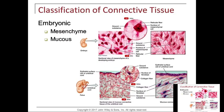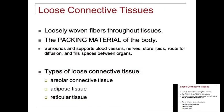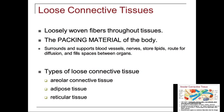The classification of connective tissue: we've got mesenchyme, which is embryonic, and everything arises from that. When we talk about classification, there's loose connective tissue, dense, cartilage, bone, and blood. Loose connective tissue is loosely woven fibers throughout the tissues — think of it as the packing material of the body. It comes in three different types: areolar connective tissue, adipose, and reticular tissue.